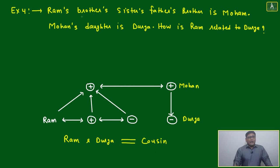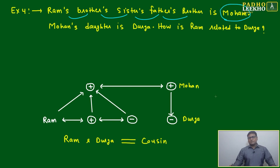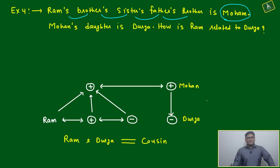Example number 4: Ram's brother's sister's father's brother is Mohan. A beautiful sentence — perplexing.